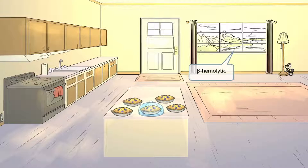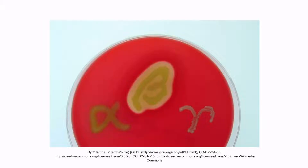Look closely outside of the window. Can you see that they live right on the bay? Bay sounds like beta, so it will represent that Streptococcus pyogenes is beta hemolytic. This is a figure of the three types of hemolysis, which we discussed in more detail in our video on Listeria. Beta hemolysis looks like this — notice that there is a zone of clearing around the colony.